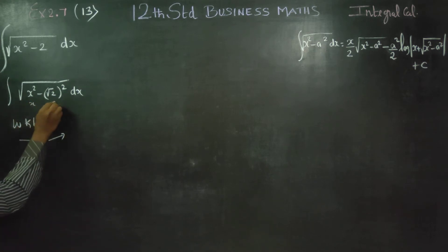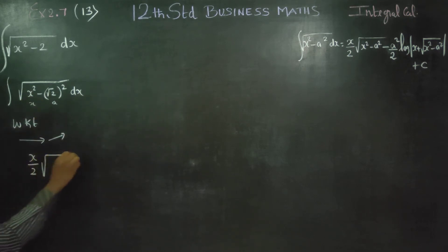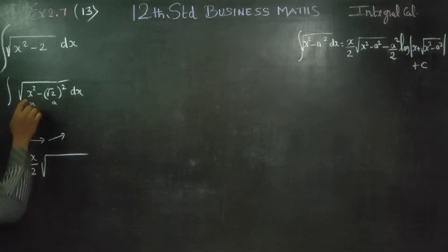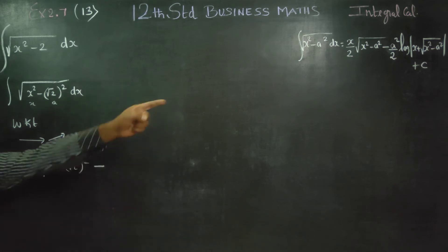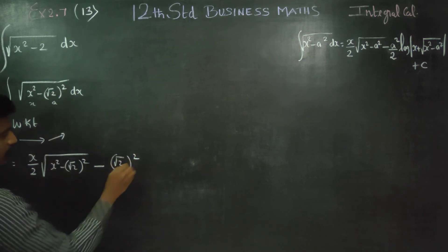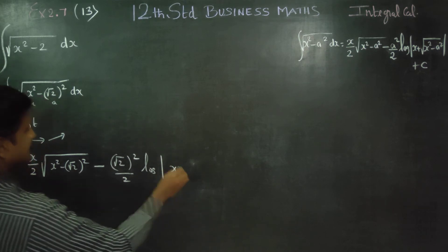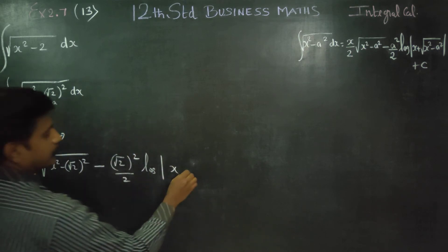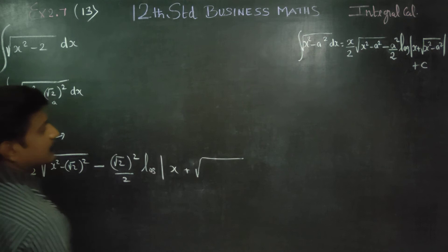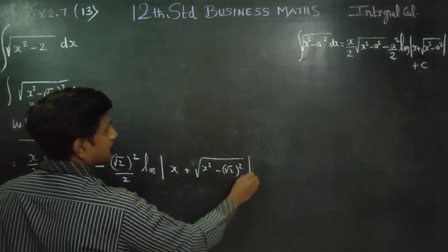x and a. So that's the formula: x by 2 square root of x square minus a square, minus a square by 2, logarithm of modulus of x plus root of x square minus a square, x square minus root 2 square plus c.